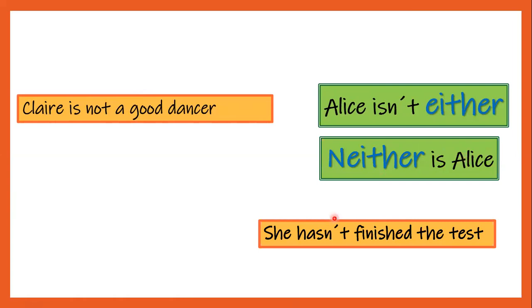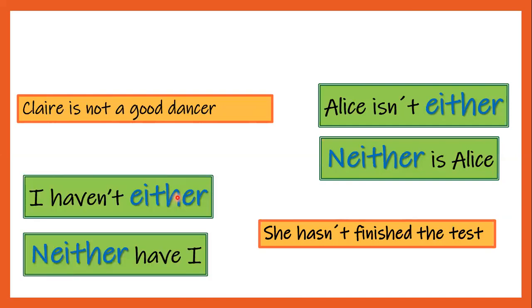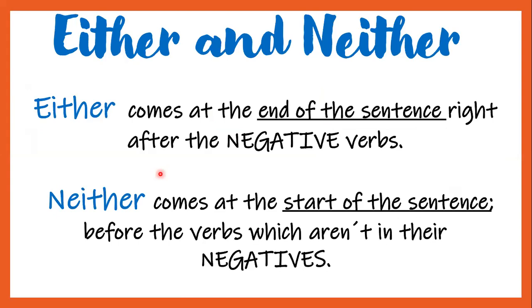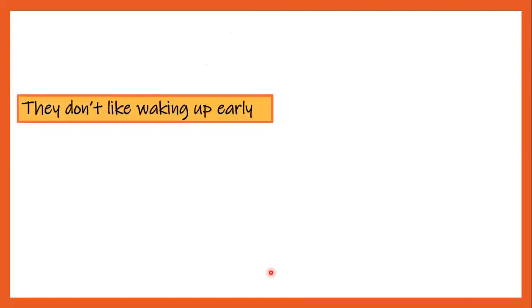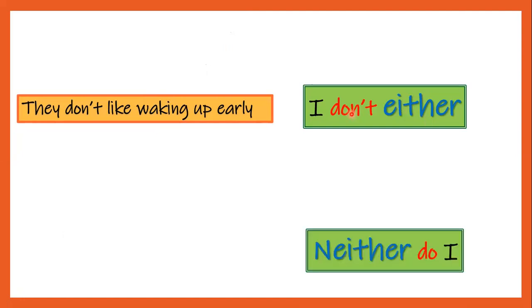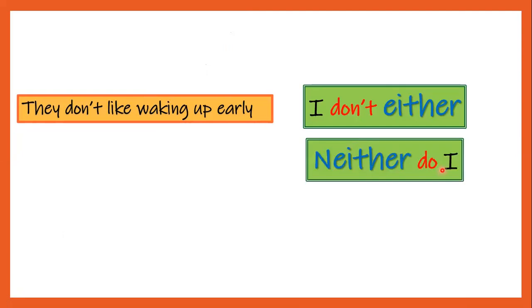'She hasn't finished the test — I haven't either / Neither have I.' So remember, either and neither are used for negative sentences when we agree with a negative statement. Either goes at the end of the sentence right after the negative verb, and neither comes at the start of the sentence before the verb, which is then used in its positive form. For example: 'They don't like waking up early — I don't either.' We write either right after the verb in negative.